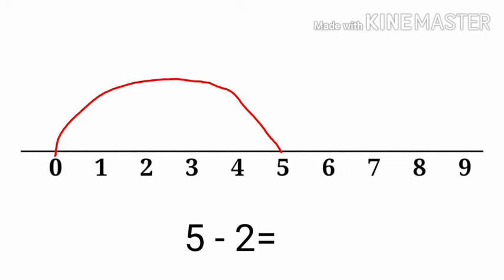So let's see again. The number is 2. So what will we do? We will do backward counting 2 times. After doing backward counting 2 times, the pencil stops at which number? We started from 5 and did backward counting 2 times, so the pencil stopped at number 3. So the answer is 5 minus 2 equals to 3.